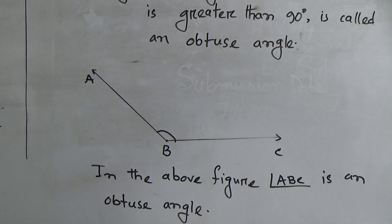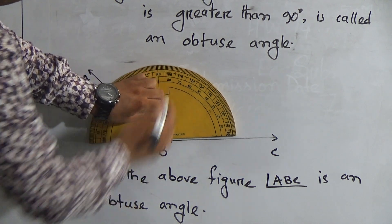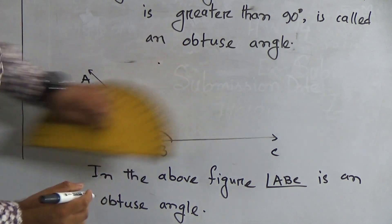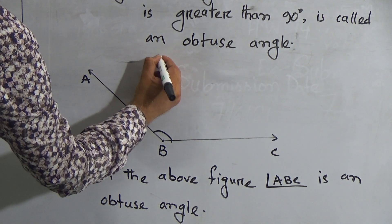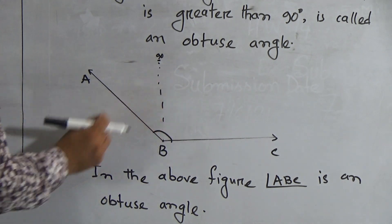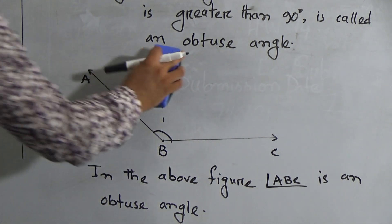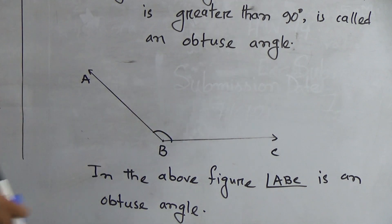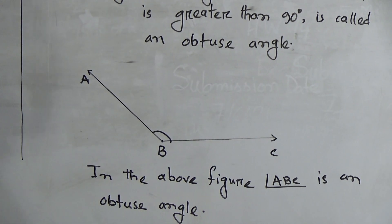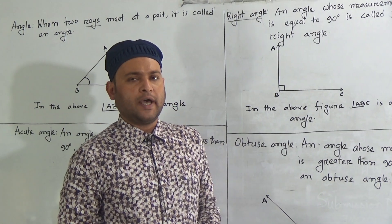Look my students — here if I put the protractor on this point and find 90 degrees, here is 90 degrees. So the angle ABC is bigger than 90 degrees, so it is called an obtuse angle. Hope you understood the definition of angle, acute angle, right angle, and obtuse angle. Practice it at your home more and more. Take care of yourself, see you soon, and till then Allah bless you.